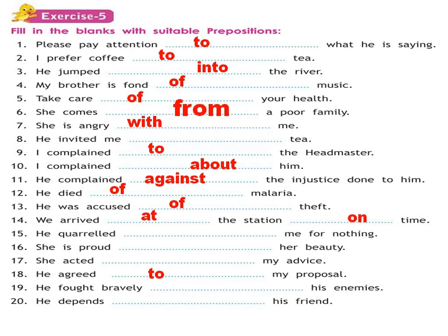On time. He quarreled dash me for nothing — 'quarreled with me'. She is proud dash her beauty — we always use 'of' with proud, so 'proud of her beauty'. She acted dash my advice — you can write 'upon' meaning she agreed and followed my advice, or 'against' meaning she didn't listen. He agreed 'to' my proposal — we always use 'to' with agree. He fought bravely dash his enemies — 'with his enemies'. He depends dash his friends — 'depends on his friends'.